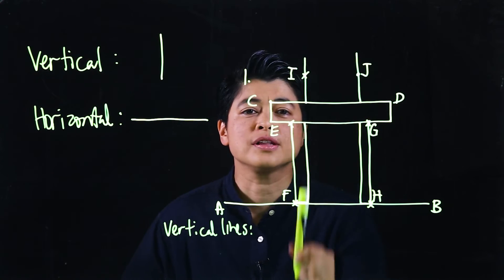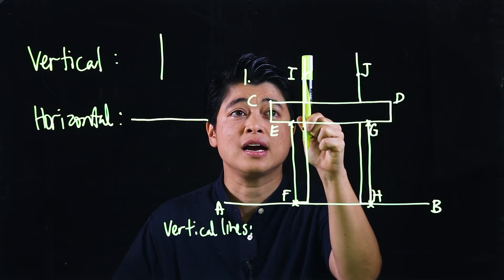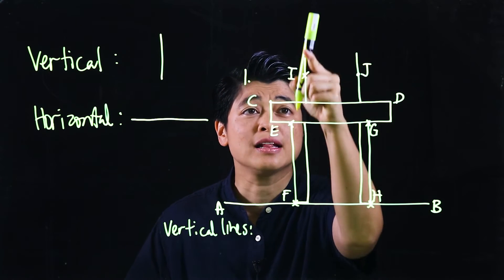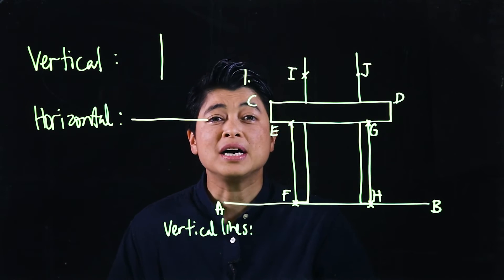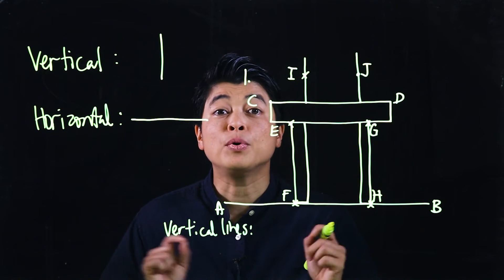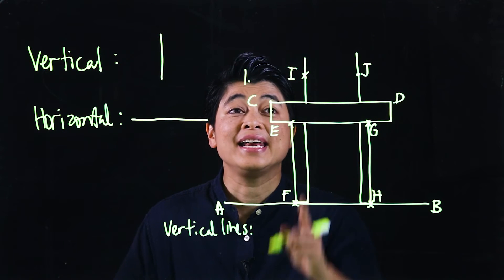Those are the ones that are standing upright. Now, this cannot be a vertical line on its own because there's only one point. A line must be connected between two points, so we cannot say line I - that's not correct.